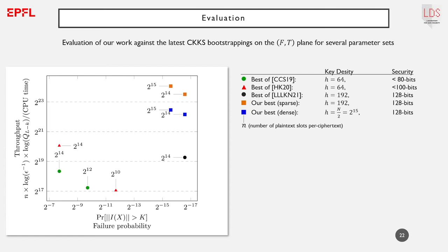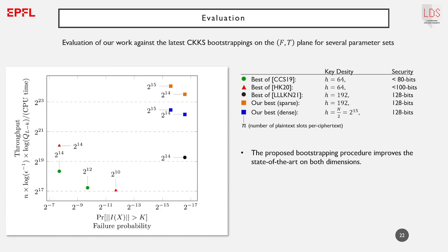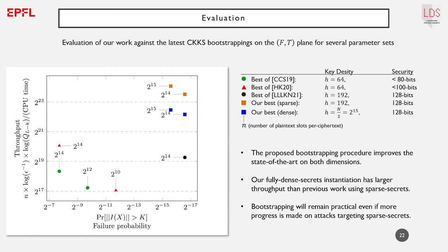Our best performing parameter sets for sparse secrets are plotted as orange squares and for fully dense secrets as blue squares, with labels indicating the number of plaintext slots per ciphertext. We also include the best results from previous works and the work of Lee et al., also presented at Eurocrypt this year. We report new security estimates for previous works considering the most recent attacks on sparse keys. Our improved bootstrapping has an order of magnitude larger throughput than previous works and considerably lower failure probability. Moreover, its instantiation with a fully dense key has larger throughput and is more reliable than previous work using sparse secrets — meaning bootstrapping CKKS will remain practical even if further progress is made on attacks targeting sparse keys.